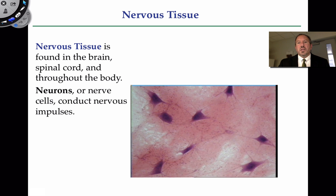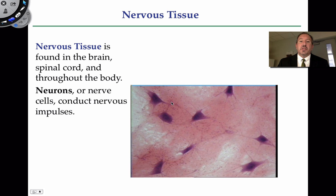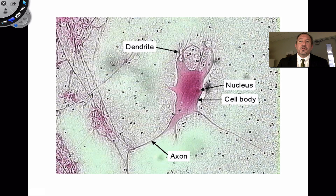Nervous tissue is capable of communication, and it's really, really interesting. It's a theme throughout the study of physiology, which is cell communication. There are a couple of different ways in which cells can communicate, and we'll look at that when we study physiology. But this is a nerve impulse — there are chemicals that actually pass between one cell and the adjacent one, called neurotransmitters. And this is how they do it.